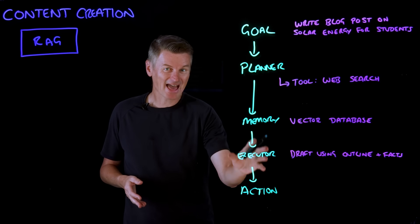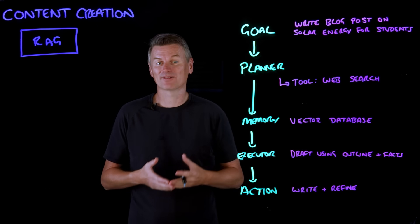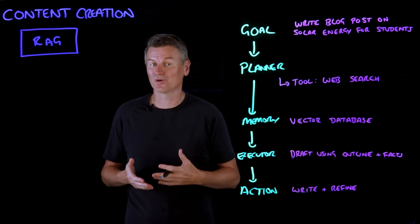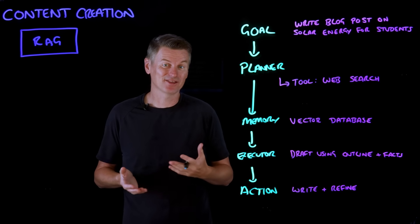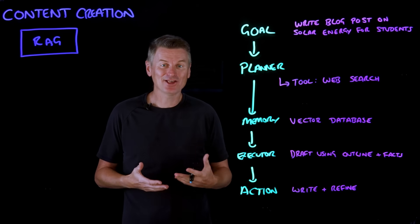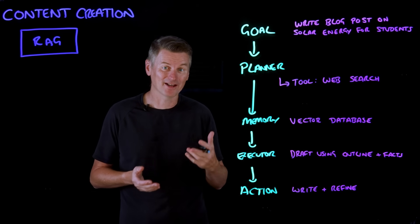Now, the agent action is to populate the blog post outline, incorporating those recalled facts and adjust the tone for the target audience. And again, the agent can work in an iterative way to refine its work.